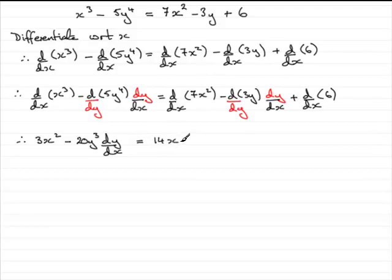Differentiating 3y. We can differentiate with respect to y and get simply 3. But we must remember to tag on dy by dx. Then we come to the last term. Differential of 6 with respect to x. That's just going to be 0. So we can leave that out.